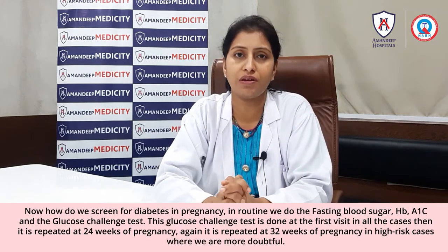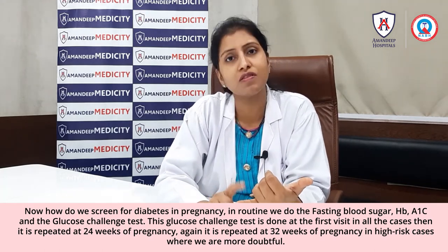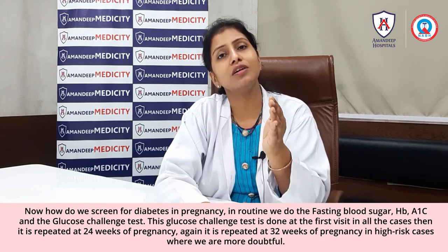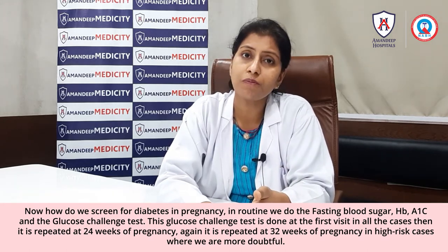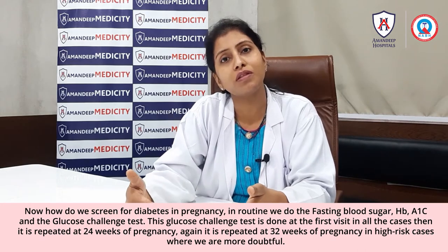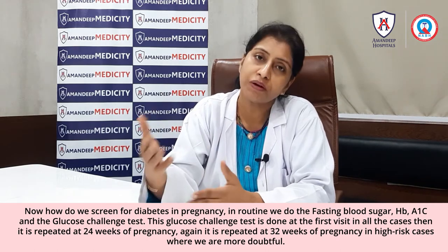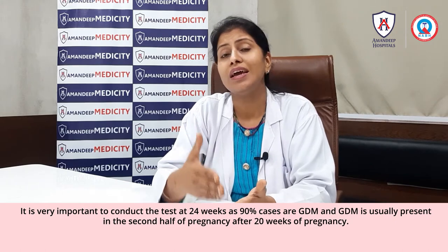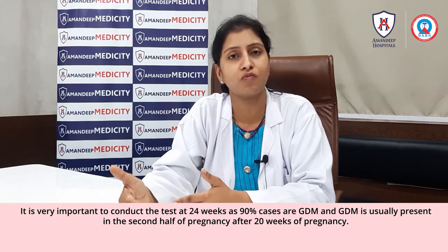How do we screen for diabetes during pregnancy? Routinely we do fasting blood sugar and HbA1c. Then we do the glucose challenge test. This glucose challenge test is done at the first visit in all cases, repeated at 24 weeks of pregnancy, and again at 32 weeks in high-risk cases. Testing at 24 weeks is very important because 90% is GDM and GDM usually presents in the second half of pregnancy, after 20 weeks.